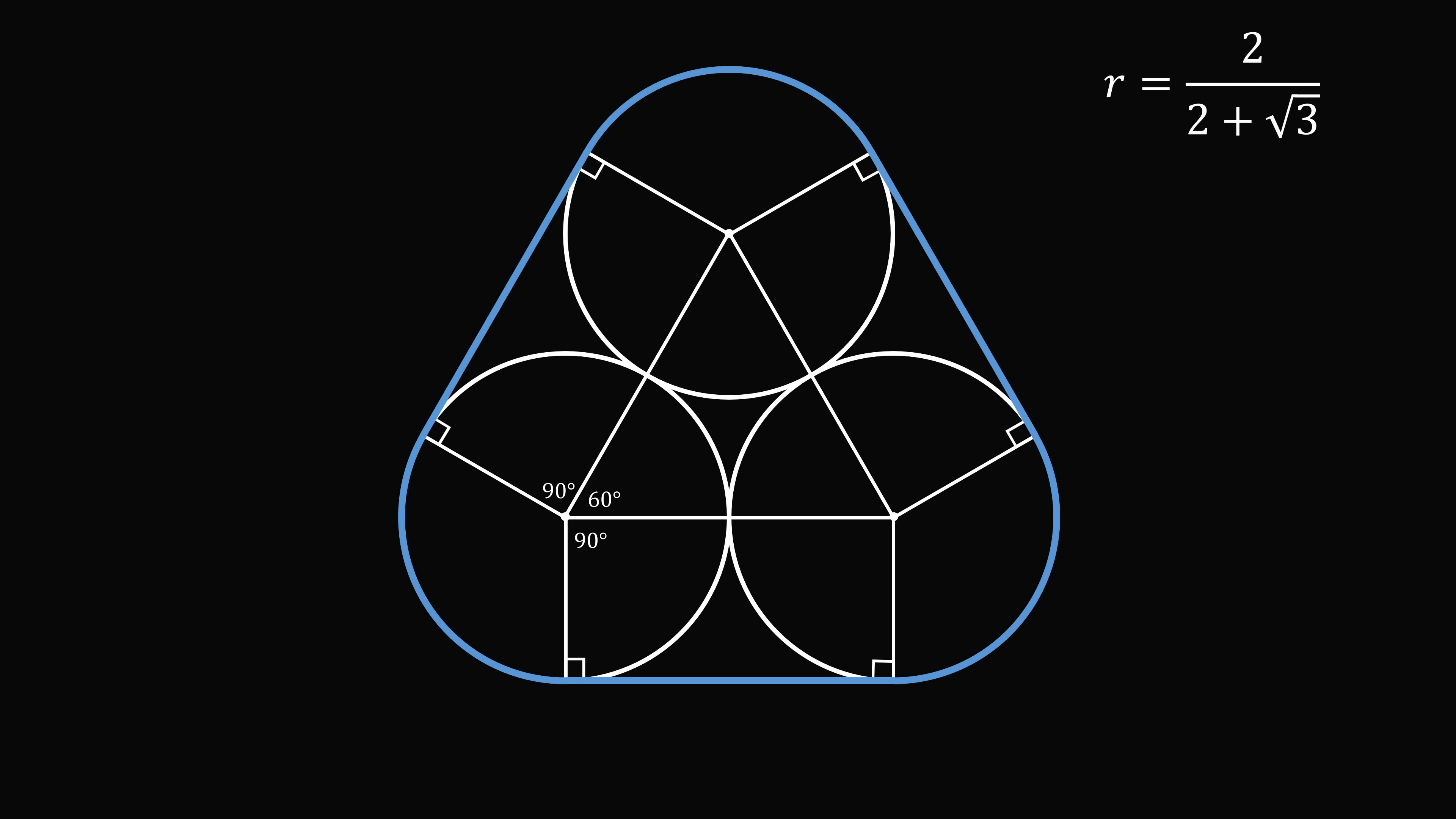Now each angle in a rectangle is equal to 90 degrees. So we have 90 degrees here and here. Now if we go all the way around, we have 360 degrees for the circle. So we can subtract 90 degrees, 60 degrees, and 90 degrees to be left with 120 degrees. This will be true for the other two central angles as well.